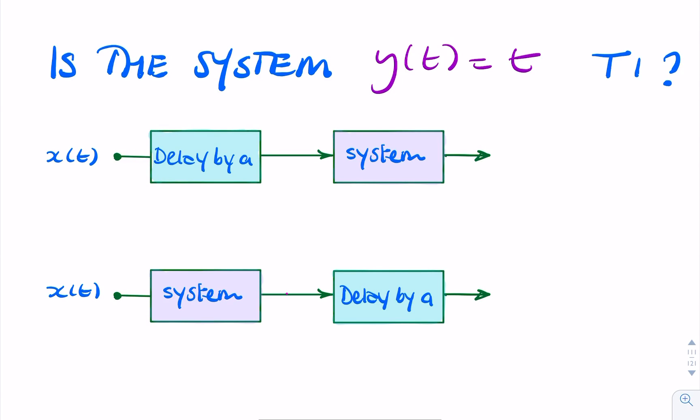We have an interesting system here where the output is simply the time. So it's like a clock, where whatever the input is, the output is the time. And the question is, is this a time invariant system?